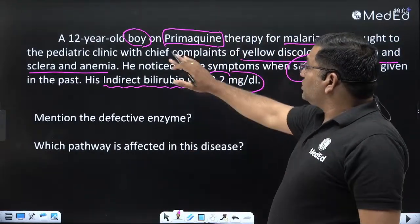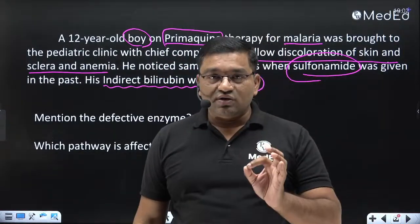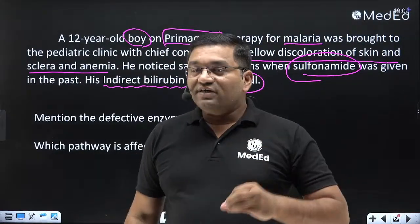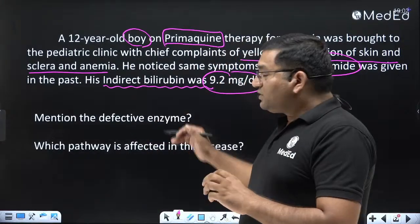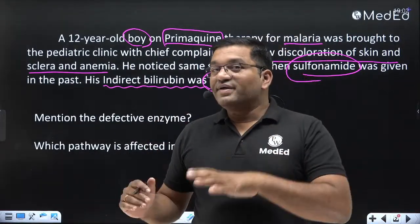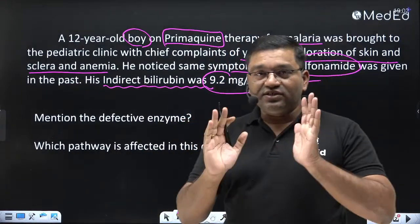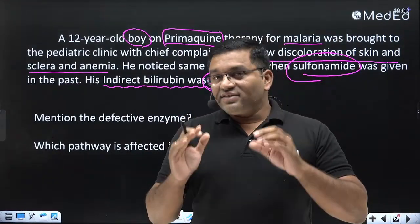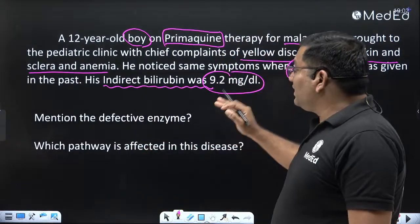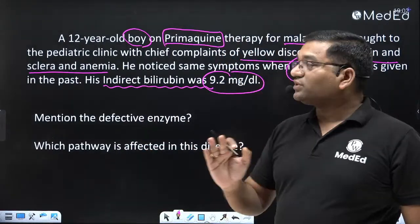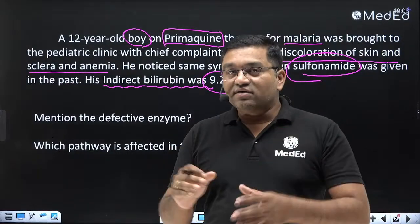G6PD deficiency is an X-linked recessive disorder. It mostly affects males; females are carriers. As such, the child is asymptomatic, but when exposed to certain oxidant drugs, symptoms develop.